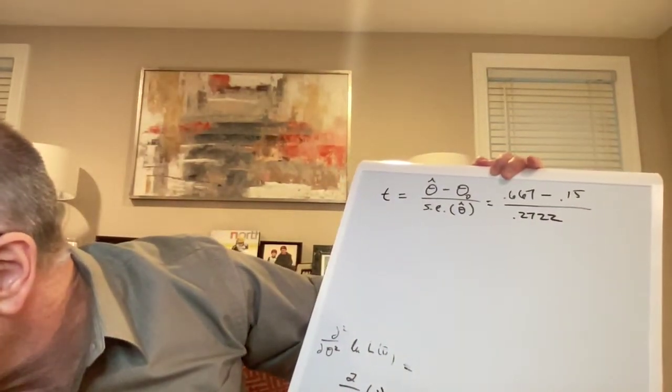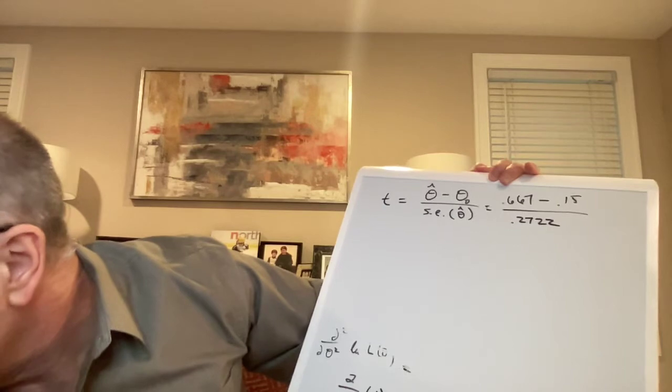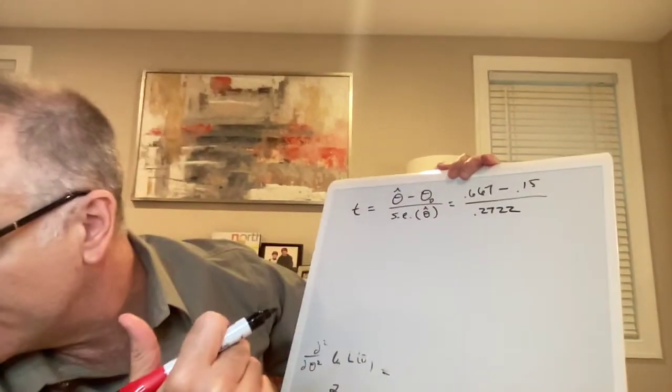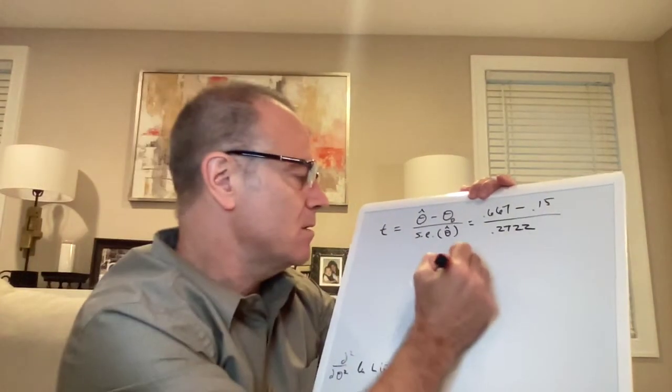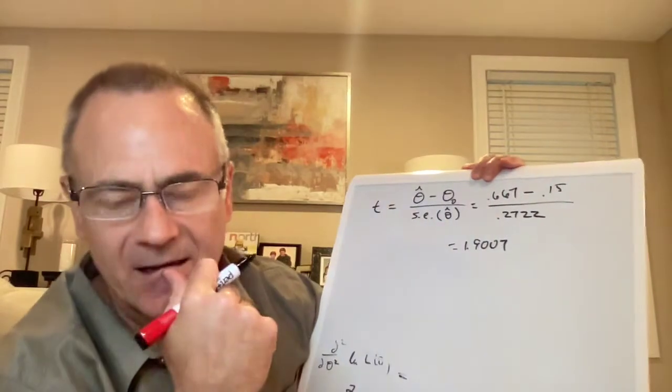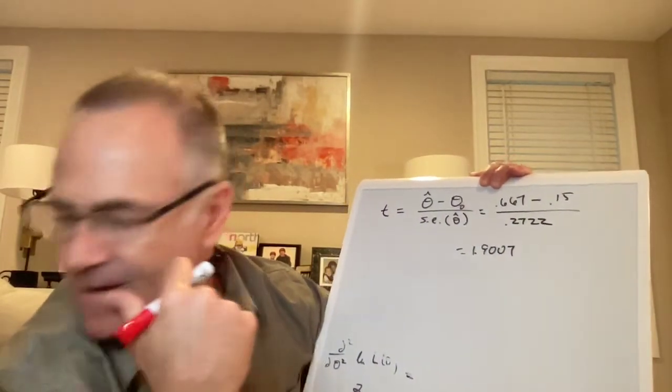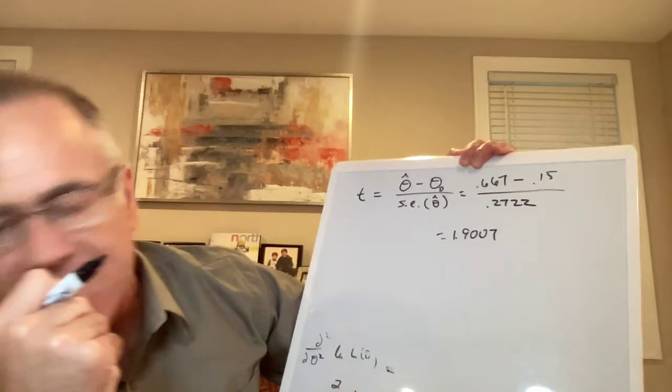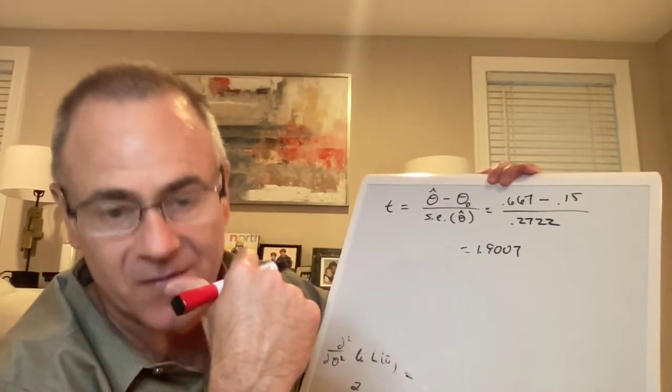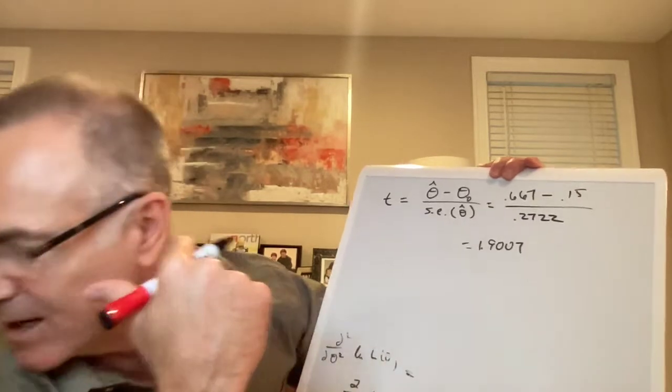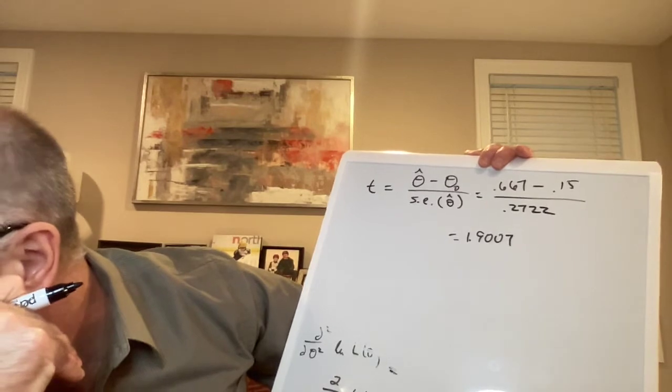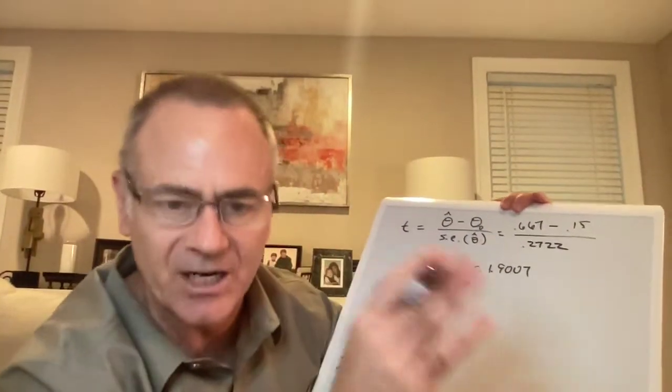And when you do that, you get 1.9007. And let's say our theory is that we believe that theta hat might be, that the true theta might be bigger than theta, in which case, wait, wait, wait, is that true? No, no, no. So we could have rejected.